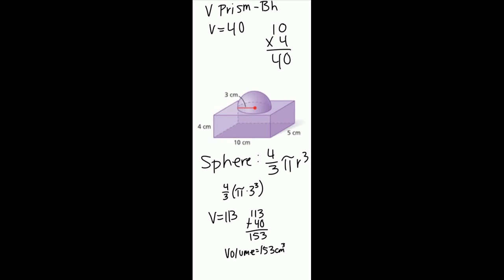But since it's just half, we need to divide it by 2 and we get 56.5. Add that to 40 and it equals 96.5. I forgot to half the sphere when I worked it out, so that is great.